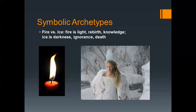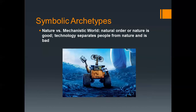More symbolic archetypes: fire versus ice. Fire represents light, rebirth, and knowledge, while ice represents darkness, ignorance, and death. There's the White Witch from Narnia — she represents that cold ice; she's dark and evil and represents the death of the land. Nature versus the mechanistic world is a newer archetype — nature is good while technology is evil. Technology separates people from nature and is bad. If you've seen WALL-E, we see through WALL-E's eyes how technology has changed people and the way they relate to each other and care for the earth.